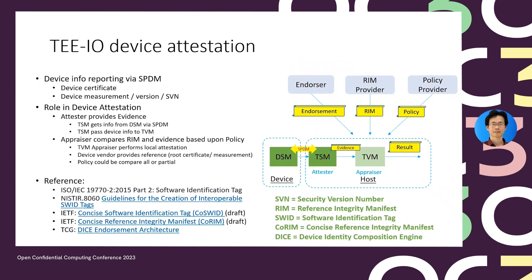The measurement match is just one example of an appraisal policy. In the real world, the policy could be flexible. For example, if the device supports firmware update, the appraisal policy can state that the device can be trusted as long as the SVN is the latest one. Then the TVM just compares the SVN collected from the device with the SVN provided in the RIM, and the rest of the measurement such as the firmware digest can be ignored.